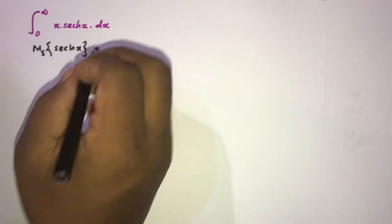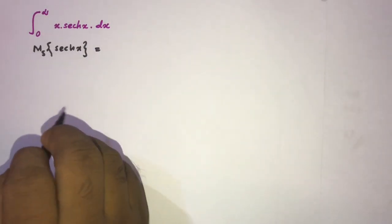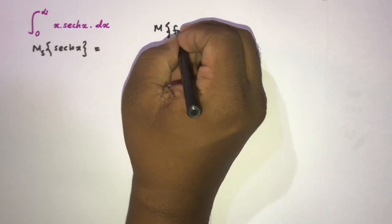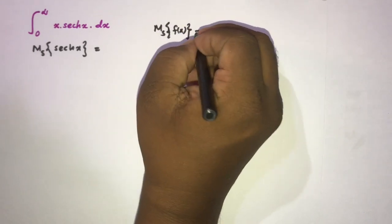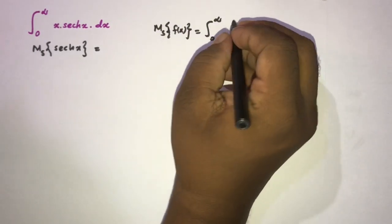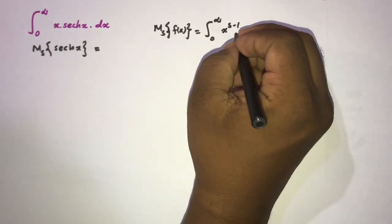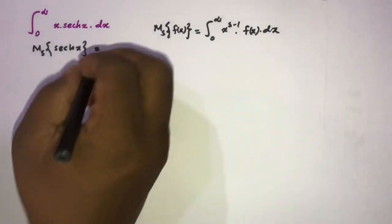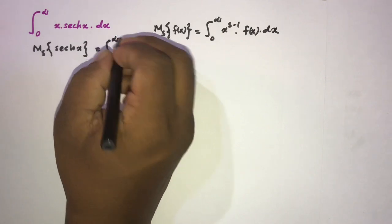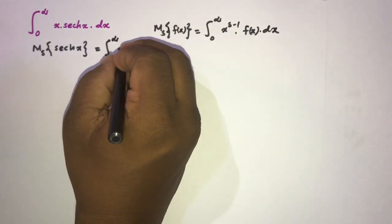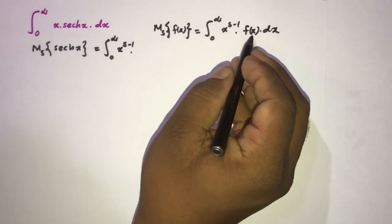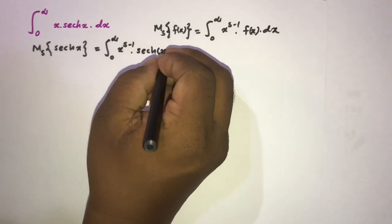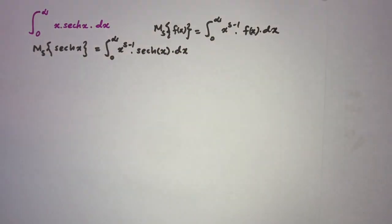We can write this using the integral definition: the Mellin transform of f(x) is equal to the integral from 0 to infinity of x^{s-1} times f(x) dx. So here we write the integral from 0 to infinity of x^{s-1} times f(x), where f(x) is hyperbolic secant of x, dx.